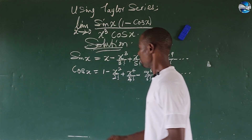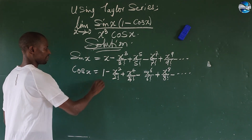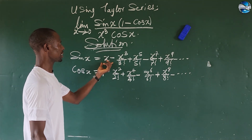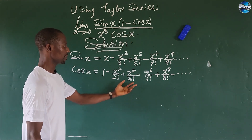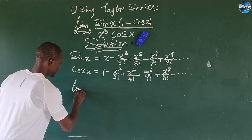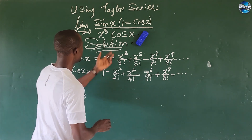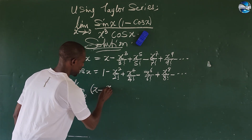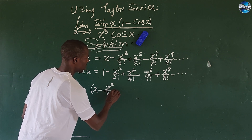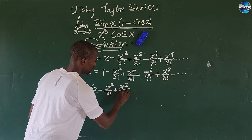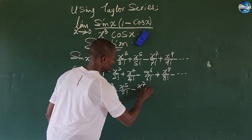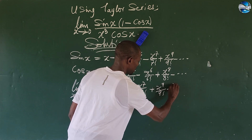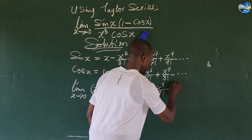From these two expressions, let's substitute these values into the limit. We replace sine(x) and cos(x) with their series. This gives us the limit as x approaches zero: in the numerator we have sine(x) as bracket x minus x to the power of three all over three factorial, plus x to the power of five all over five factorial, minus x to the power of seven all over seven factorial, plus x to the power of nine all over nine factorial in brackets.